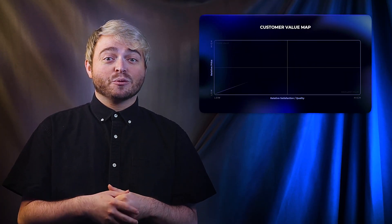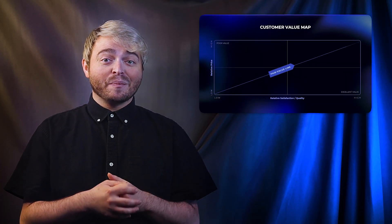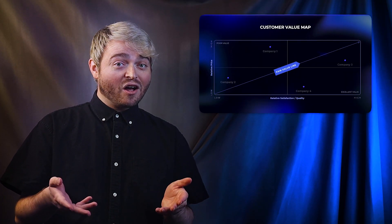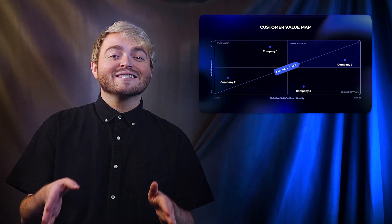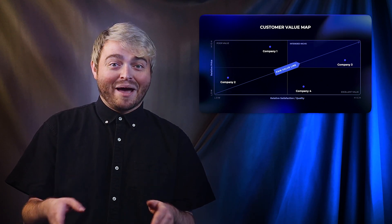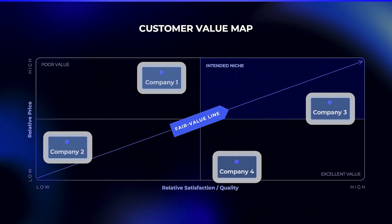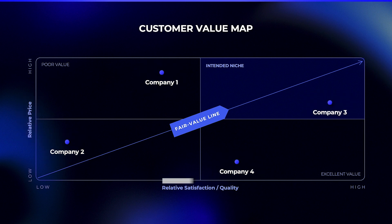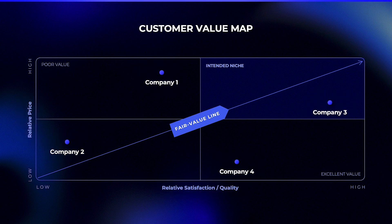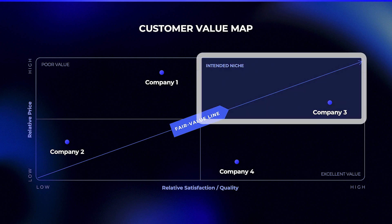Now let's bridge market perceptions with what a business actually has to offer. A simple way to visualize where your company offerings fall in the marketplace is with a customer value map. The map compares a company or a particular product's relative price with its relative satisfaction and where you want your business to be — that is the intended niche.